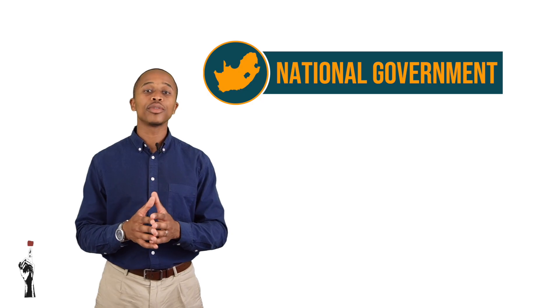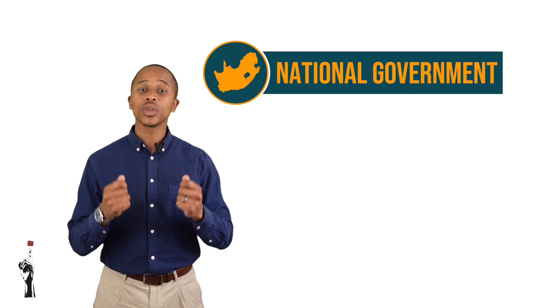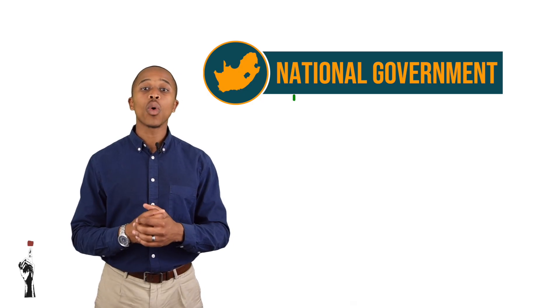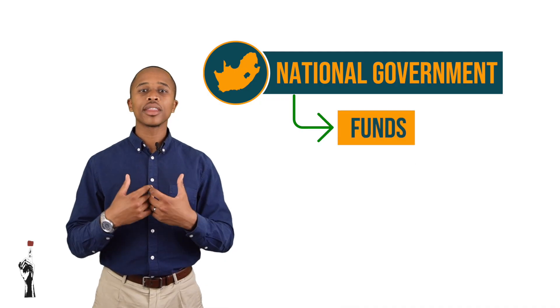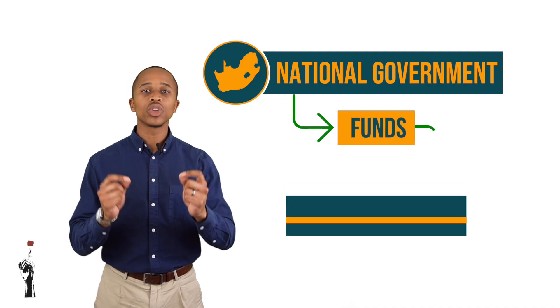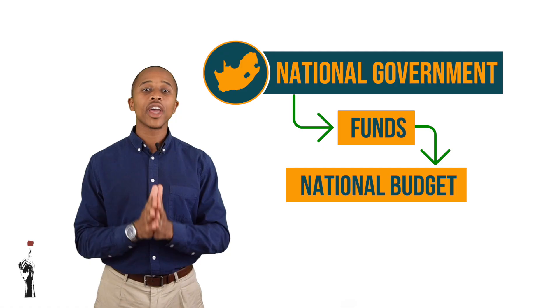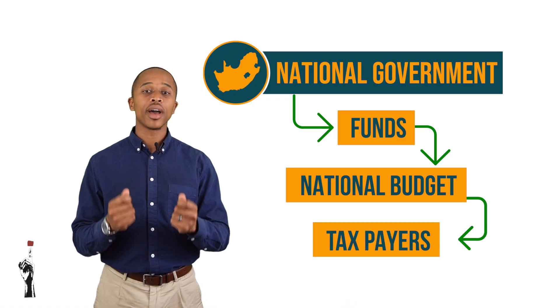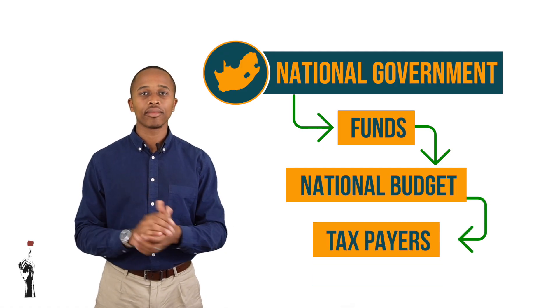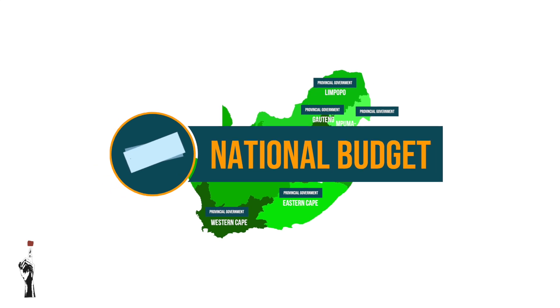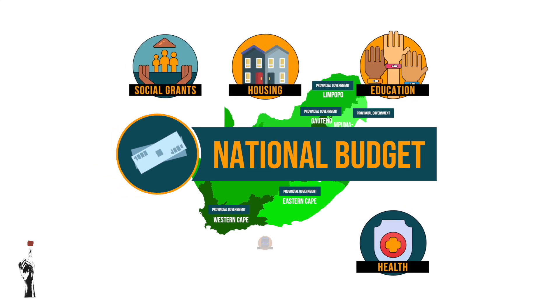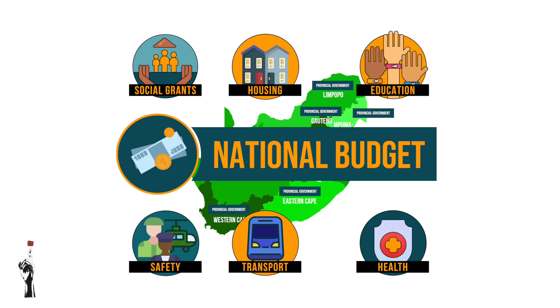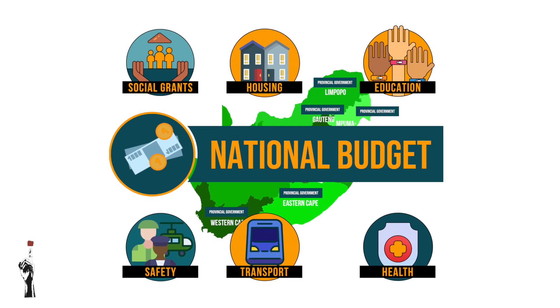Before we can understand the role of national government, we need to understand that for them to provide services to its citizens, they do require funds. Where do they get the funds from? From the national budget. The national budget is funded by the taxpayer. In the next lesson you will learn more about the national budget and how it's divided between the departments and provincial government.